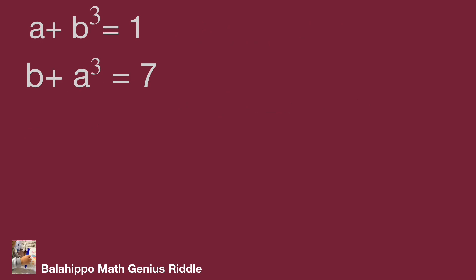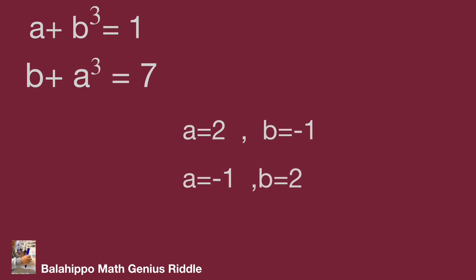We have two candidate solutions from the previous process. Checking the given equations a plus b cubed equal to one and b plus a cubed equal to seven: when a equals two and b equals minus one, substituting meets the requirement. When a equals minus one and b equals two, substituting does not satisfy both equations. So the only answer is a equal to two, b equal to minus one.